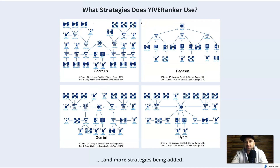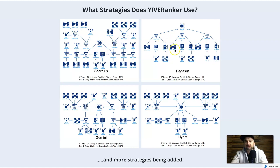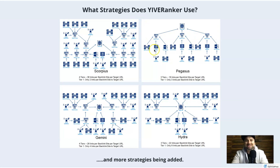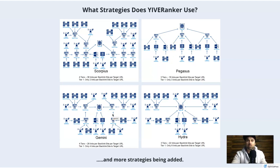Once you have the link you want to build backlinks for, you put it into one of these four types of strategies: Scorpius, Pegasus, Gemini, and Hydra. There are a few differences — Google prefers different things depending on your situation. If you're targeting something high in competition, use Scorpius or Hydra; if you just want to get a little more traffic to start, go with Pegasus or Gemini. You don't have to stop at one strategy — you can use a lighter strategy for the first month or two, then move to a more rigorous one later.